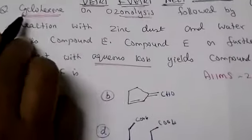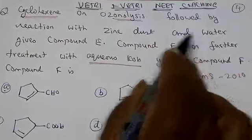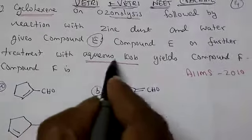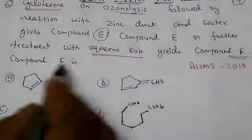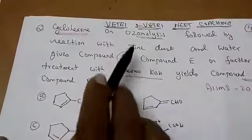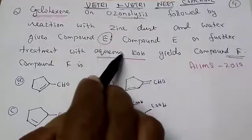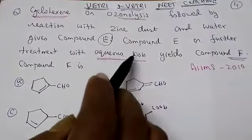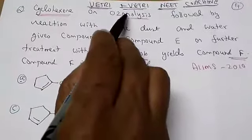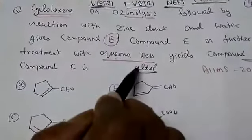The question is: cyclohexene on ozonolysis followed by reaction with zinc dust and water gives compound E. Compound E on further treatment with aqueous potassium hydroxide gives compound F. Here they are testing two concepts: one is ozonolysis and another is aqueous potassium hydroxide. This indicates they are testing knowledge of aldol condensation. The product of ozonolysis is a carbonyl compound, followed by aqueous potassium hydroxide to give an aldol product.